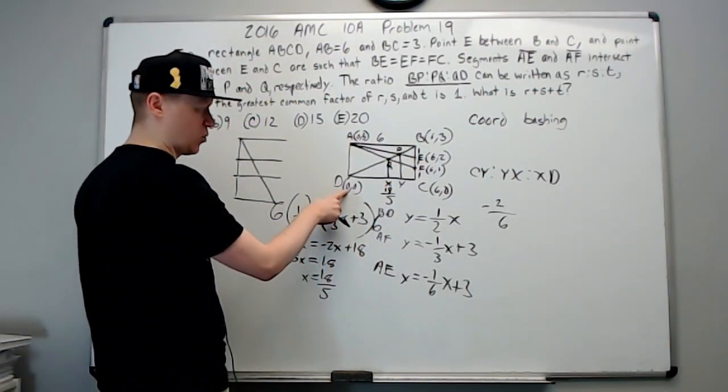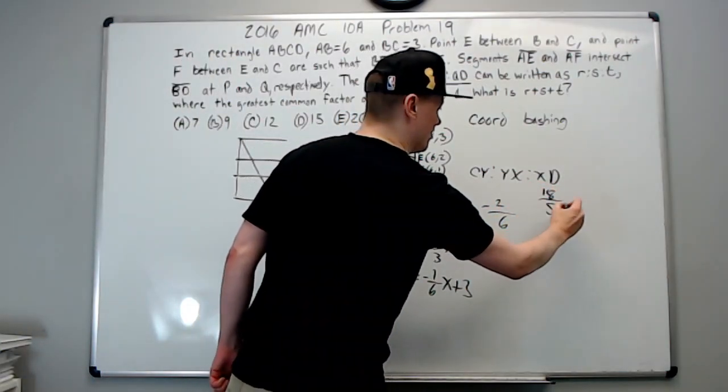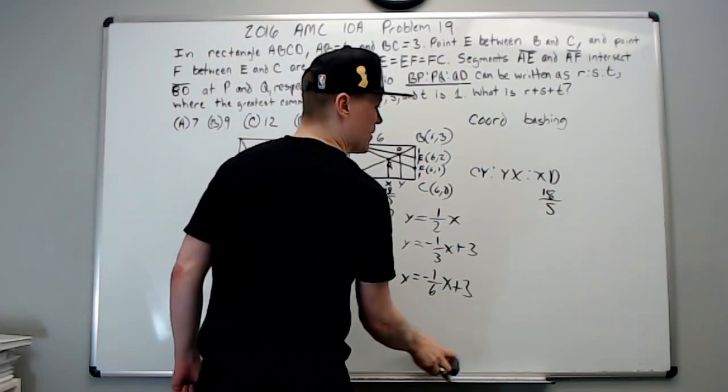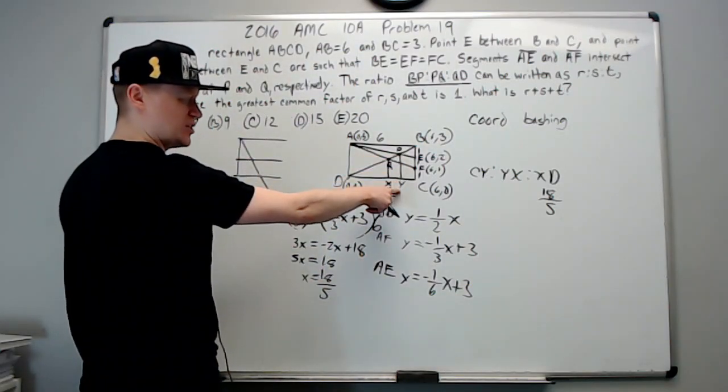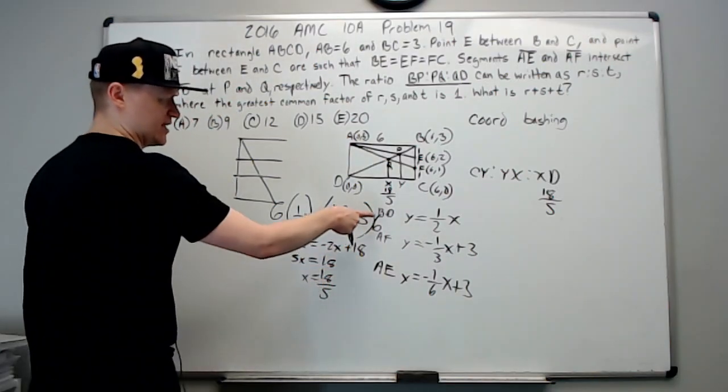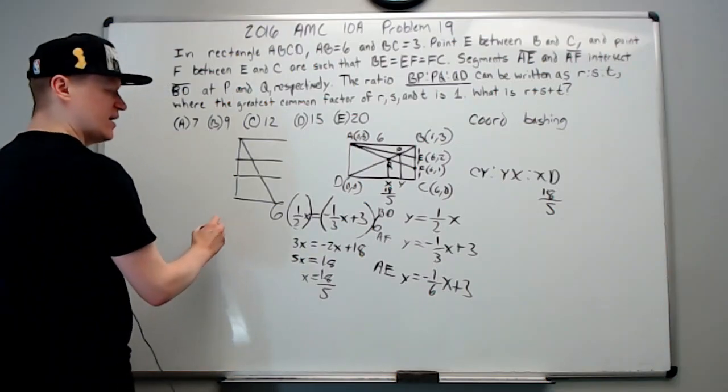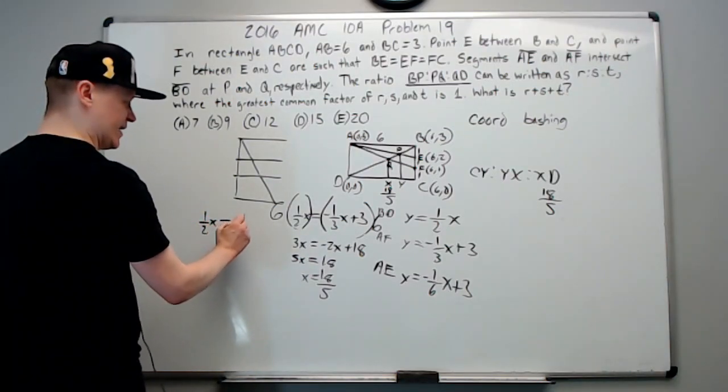So this is 18 fifths, and since this x coordinate is zero, we now know DX is 18 fifths. I'm going to erase this to leave space. Okay, what about the x coordinate of P, which is also the x coordinate of Y? Same thing, you're just going to let BD now equal AE.